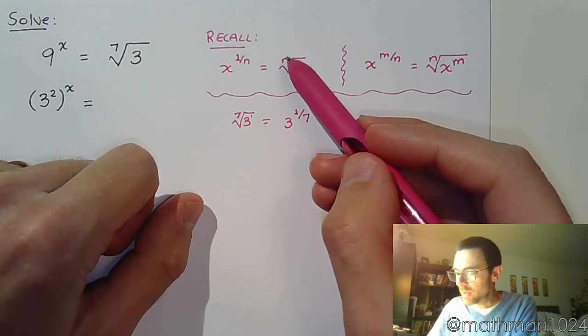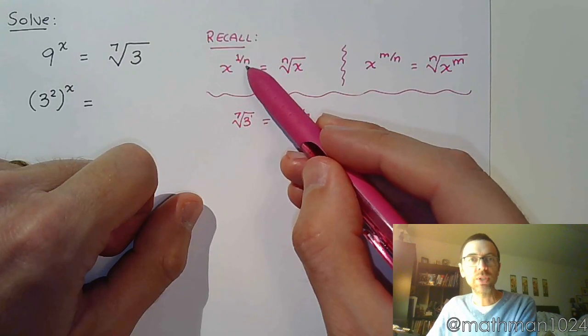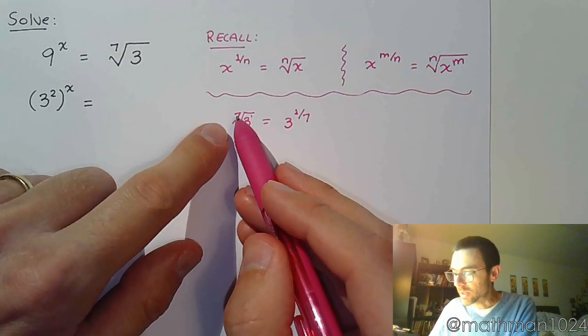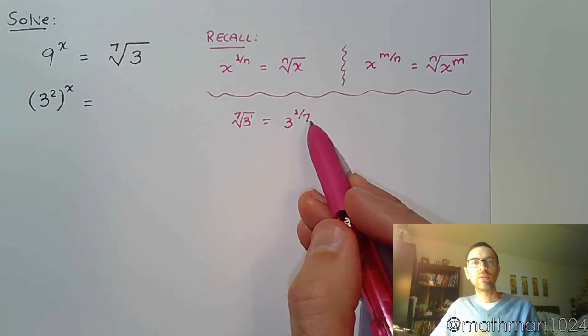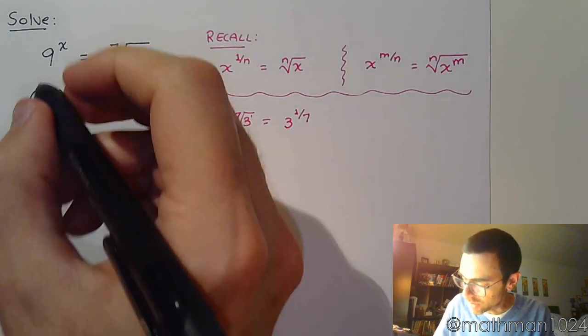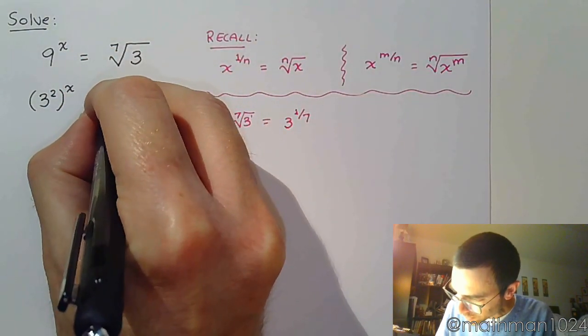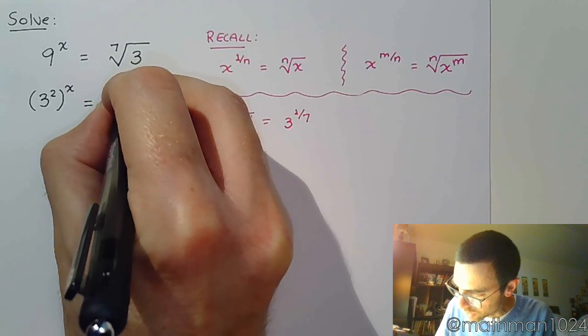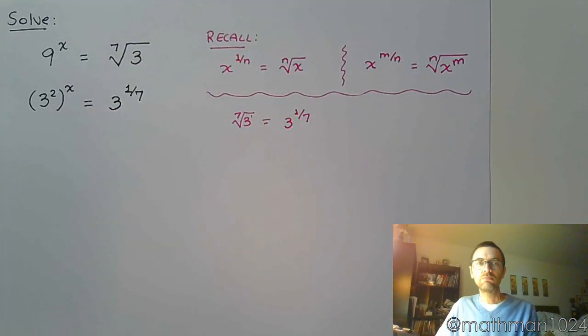Look at the expression we have up here. The index matches with the denominator of your power. So my index is 7. That's going to be the denominator of my power when I write that as a rational exponent. So the right side of the equation, which we see over here, is 3 to the 1/7.